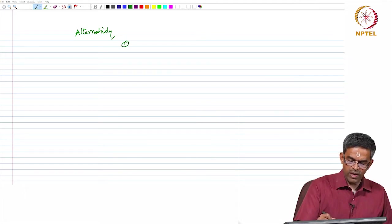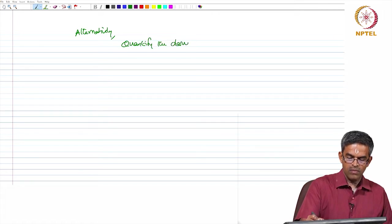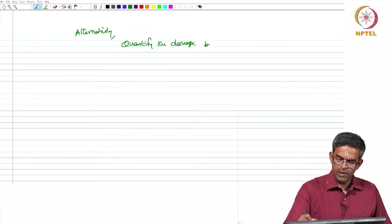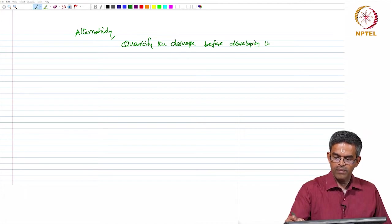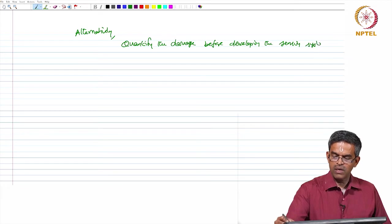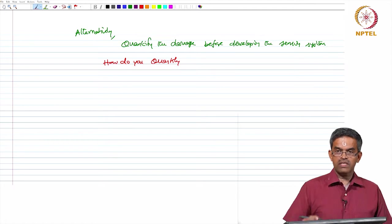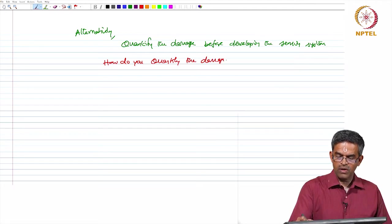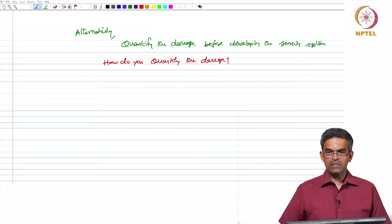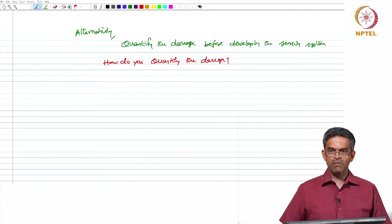Alternatively, quantify the damage before developing the sensing system. Now, the question comes: how do you quantify this damage? How do you know what would be the extent of damage? That is an interesting question. If you cannot quantify them, you cannot have any alternate method of sensing system except to pick up the array of sensors available in the market, lay them as per the directions given by the manufacturers, and keep acquiring data, believing that the data measured are damage index parameters, which may not be true in most cases.